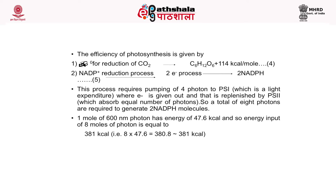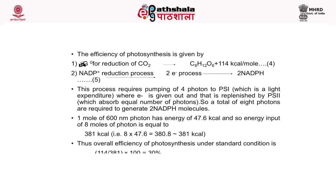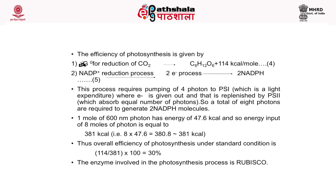NADP+ in the reduction process uses 2 electrons and produces 2 NADPH. This process requires pumping of 4 photons to photosystem I, where an electron is given out and replenished by photosystem II, which absorbs an equal number of photons. So a total of 8 photons are required to generate 2 NADPH molecules. One mole of 600 nm photons has energy of 47.6 kilocalories, so energy input of 8 moles of photons equals 8 × 47.6 = 381 kilocalories. Thus, overall efficiency of photosynthesis at standard conditions is 114 ÷ 381 × 100 = 30%.